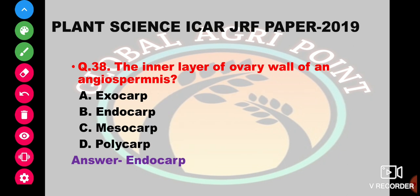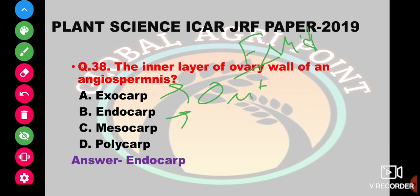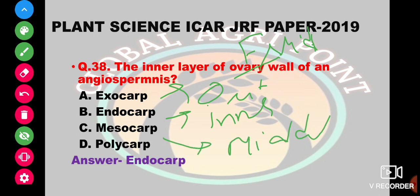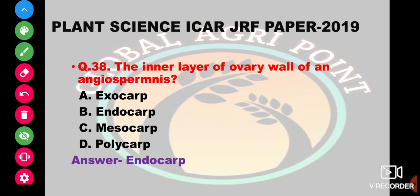The inner layer of the fruit wall of an angiosperm is exocarp, endocarp, mesocarp, or polycarp. Exocarp is the outer layer, endocarp is the inner layer, mesocarp is the middle layer, and polycarp refers to more than one fused carpel. So the answer is endocarp.